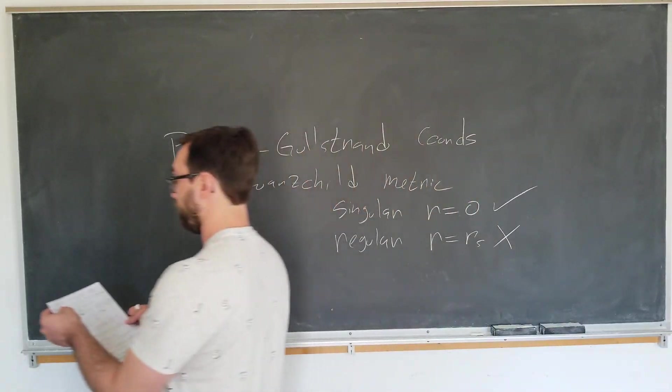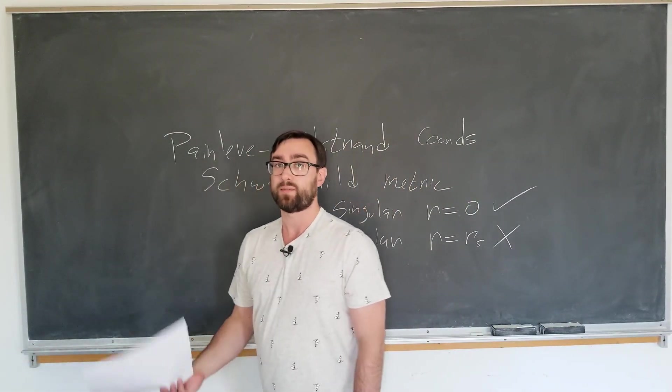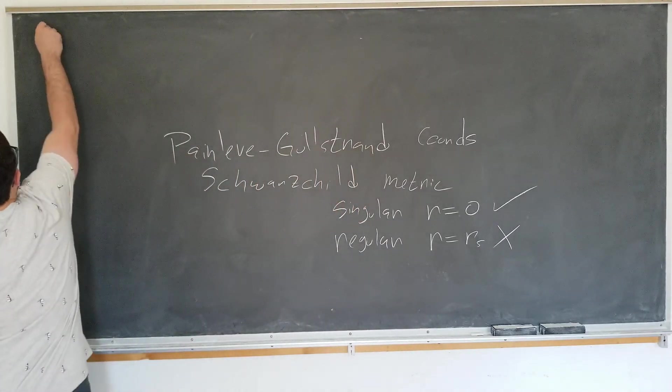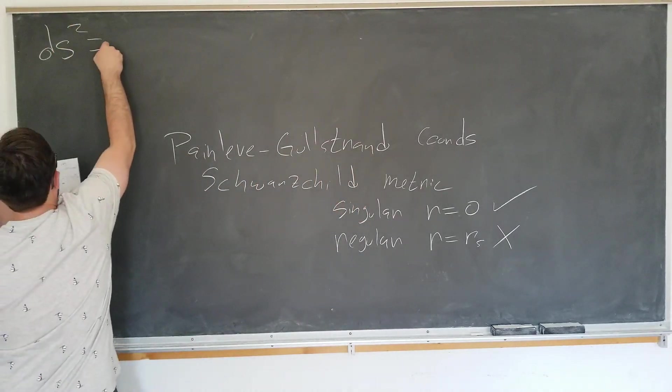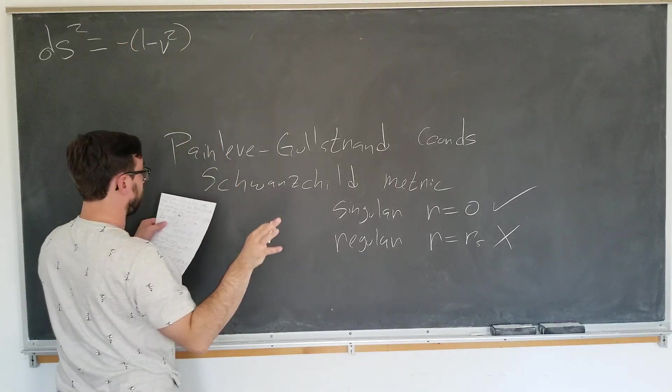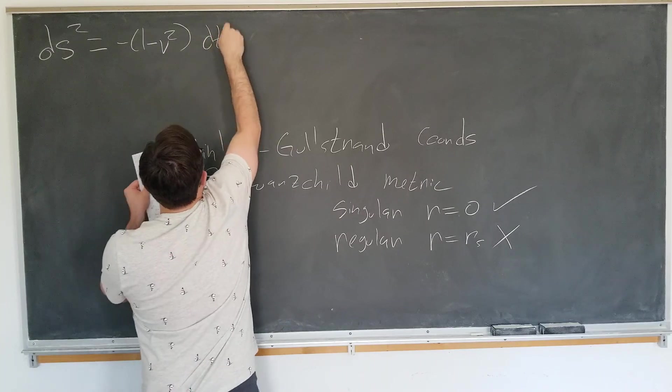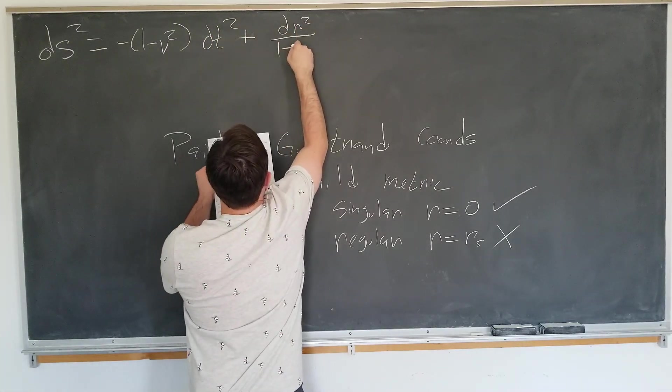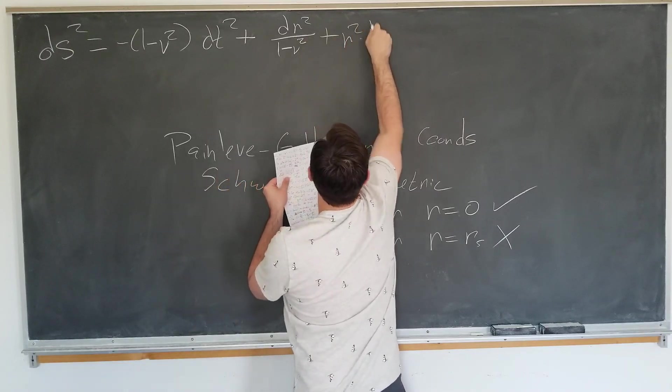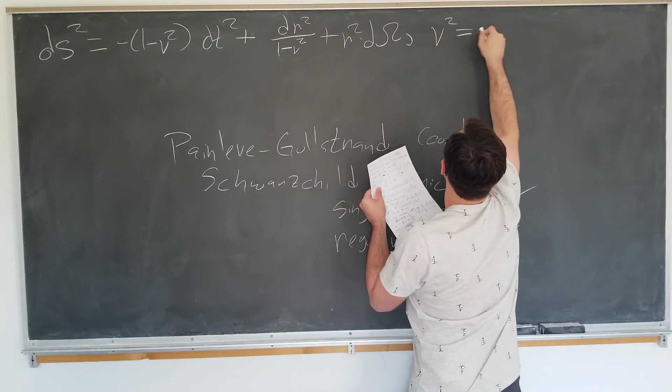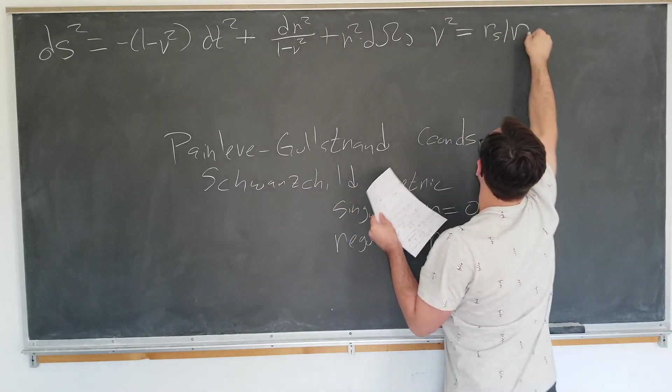We will start by writing down the Schwarzschild metric, perhaps in a different form than you're used to seeing it. The Schwarzschild metric is ds squared equals minus 1 minus v squared dt squared plus dr squared over 1 minus v squared plus r squared d omega squared. We are defining v squared to be the Schwarzschild radius divided by r.